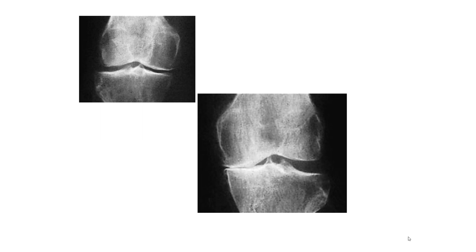This X-ray shows two grades of osteoarthritis: the upper one is mild and the lower one is severe. You can see that the medial compartment is almost entirely involved and there is bone-on-bone contact.